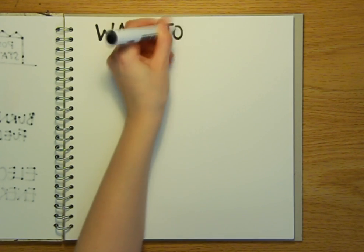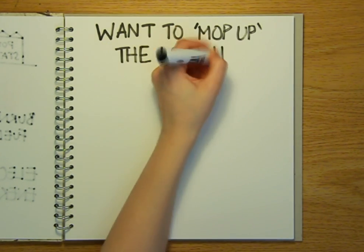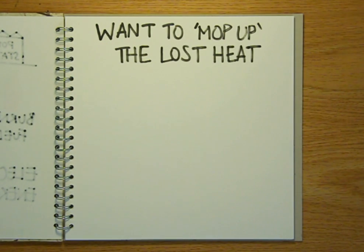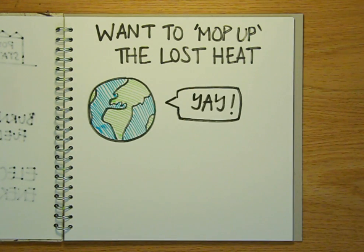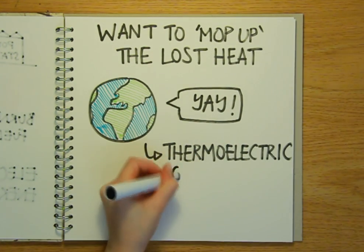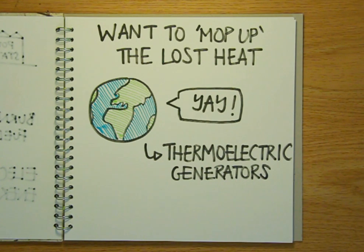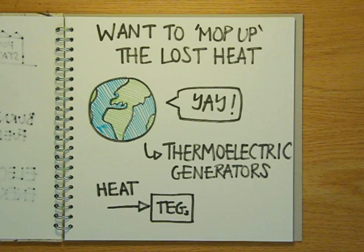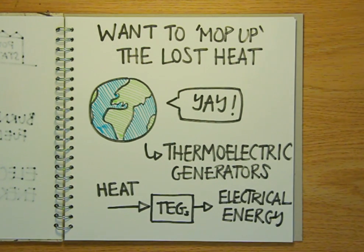But if we could mop up the wasted heat and convert it into usable electricity, this would make the power generation much more efficient, and this in turn would be better for the environment because we'd need to burn less fuel and produce less carbon dioxide. This is where thermoelectric generators or TEGs come in. These are devices that can convert heat energy directly into electrical energy without any need for moving parts like turbines.